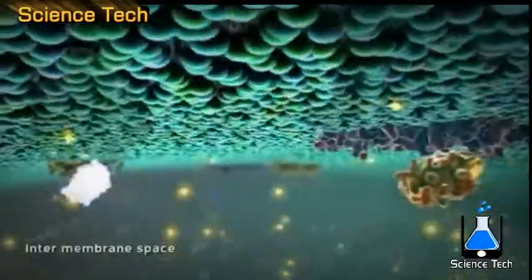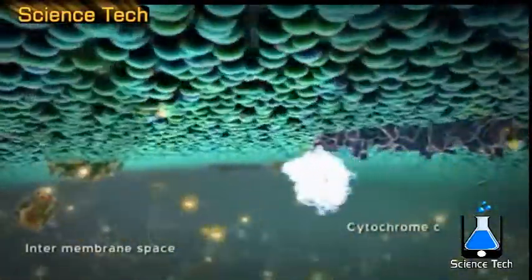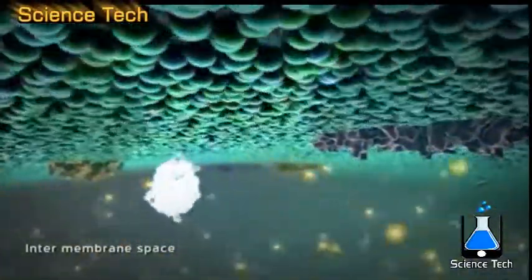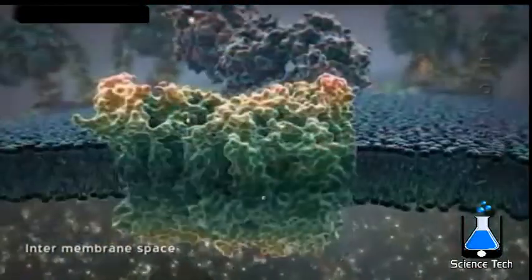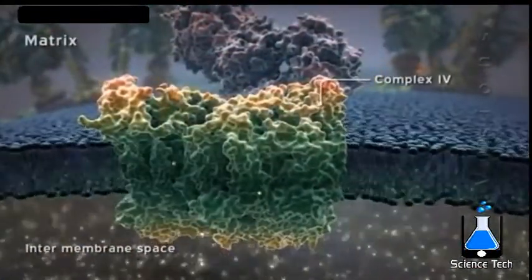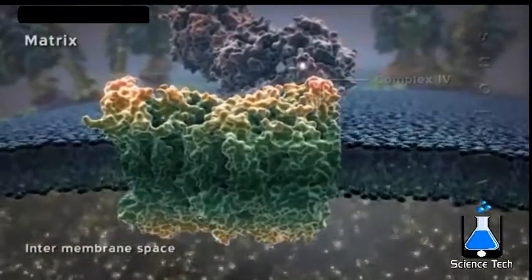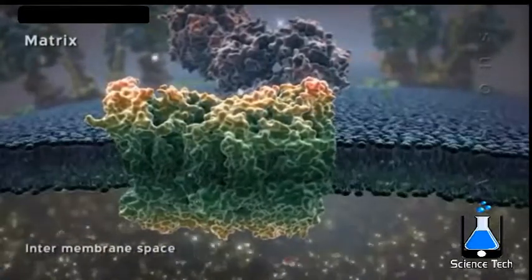Finally, electrons are accepted by cytochrome C, which carries them to complex 4, where they are transferred through another series of redox centers to their final acceptor, a molecule of oxygen, that combines with hydrogen ions to form water.